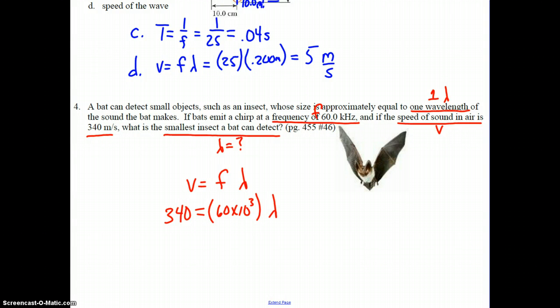Just for reference, the limit of human hearing is 20,000 hertz, or 20 kilohertz. So this is three times the limit of human hearing. We go ahead and divide: 340 divided by 60 times 10 to the third, and we should get 5.7 times 10 to the negative 3 meters.